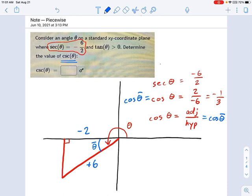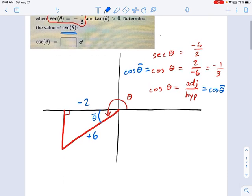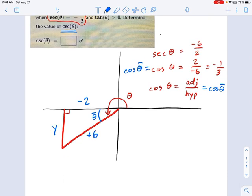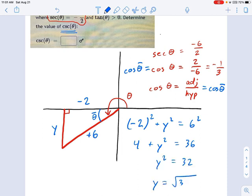Make sure that hypotenuse is positive, and your negative is going in the right direction here. Okay, so great. Now we've got a triangle that has two sides. I just need one more side. I want to know what the y distance is right there. So using Pythagorean's Theorem, negative 2 squared plus y squared equals 6 squared. So that means 4 plus y squared equals 36. That means y squared equals 32. That means y equals the square root of 32.